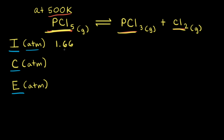We already know we're starting with a partial pressure of 1.66 atmospheres for PCl5. And if we assume that the reaction hasn't started yet, we're starting with zero for our partial pressures of PCl3 and Cl2. Some of the PCl5 is going to decompose, and since we don't know how much, we're going to call that amount X. So we write minus X, since we're going to lose some PCl5.